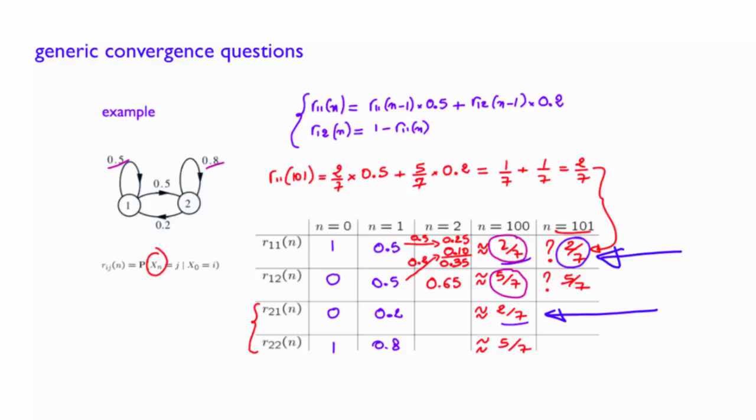Are these two properties, of long-term convergence and of vanishing effect of the initial state over the long-term convergence, always true?